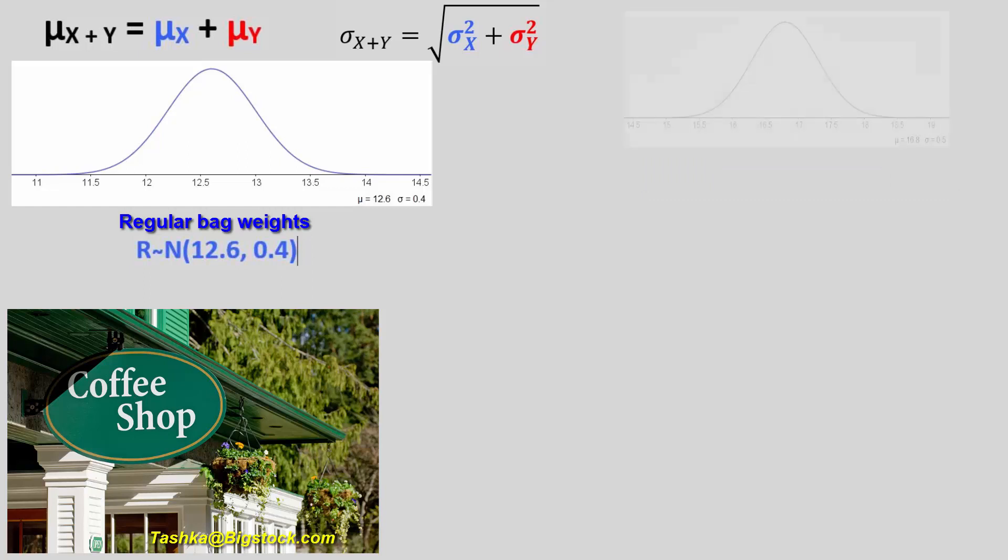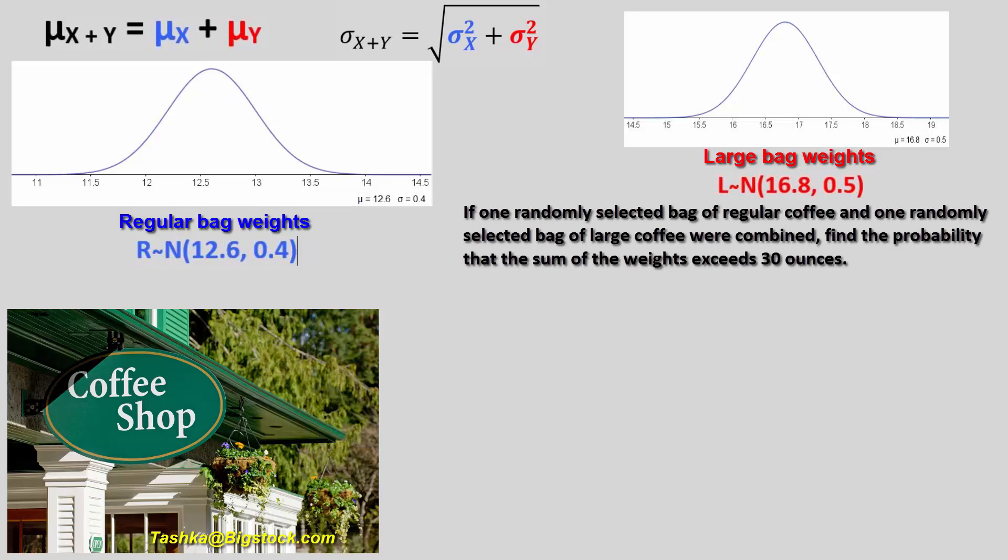The weights of large bags are normally distributed with a mean of 16.8 ounces and a standard deviation of 0.5 ounces. If one randomly selected bag of regular coffee and one randomly selected bag of large coffee were combined, find the probability that the sum of the weights exceeds 30 ounces.